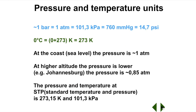Pressure means force per area. The pressure exerted by a gas is related to the rate at which its particles hit against the sides of its container. Pressure can be measured in various units: the most common are bars, atmospheres, kilopascals, and millimetres mercury. At sea level, at zero degrees Celsius, the pressure is one atmosphere, which equals 101.3 kilopascals, 760 millimetres mercury, and is approximately one bar.